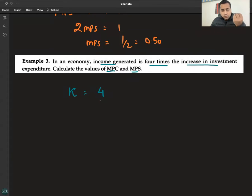In an economy, income generated is four times the increase in investment. The investment led to four times the income generation, so we have multiplier is equal to 4.